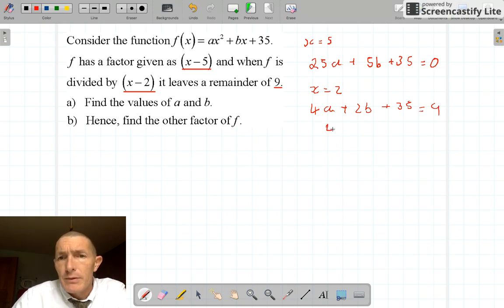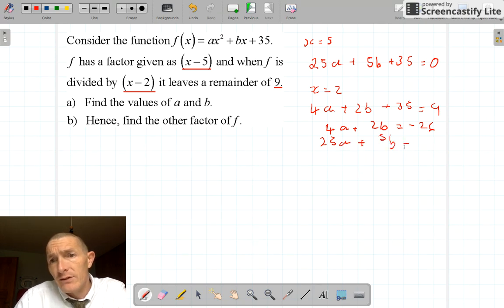If we tidy that one up we have 4a plus 2b, we take 35 from both sides, we now have minus 26. And we can keep this one almost as it is: 25a plus 5b is equal to minus 35.